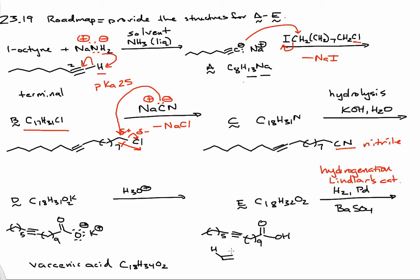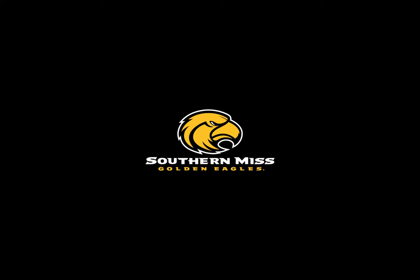We've added the hydrogen across the same face of that alkyne. The geometry is now cis. We fill in our methylene spacers and put in our carboxylic acid. This is our product which matches the molecular formula C18H34O2.